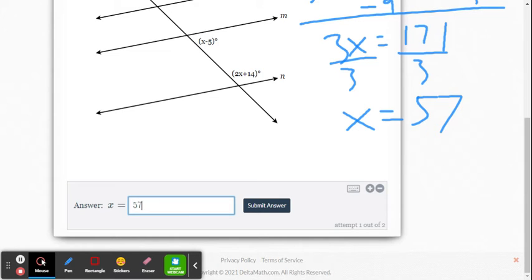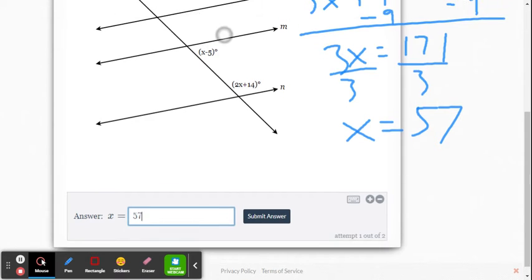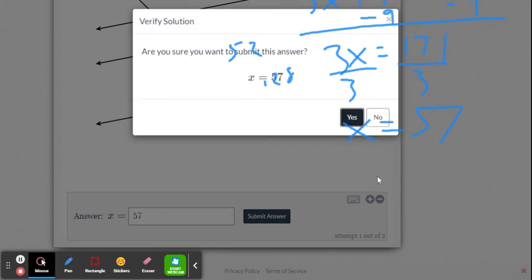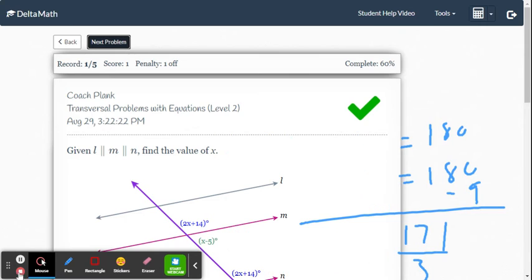Or if you have a problem where it says what's the measure of each angle, you'd substitute the 57 in for x and find the values of each expression represented by the angle. For example, 57 minus 5 is 52. So this angle is 52. And 2 times 57 is 114 plus 14 is 128. And you see how 52 and 128 add up to 180. So this should work. And it does.